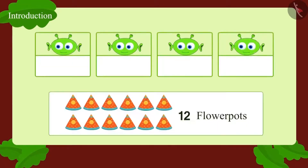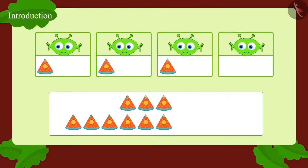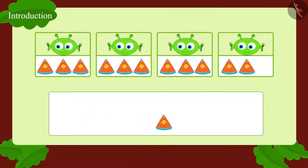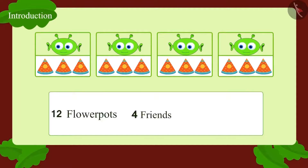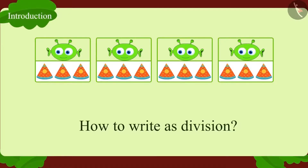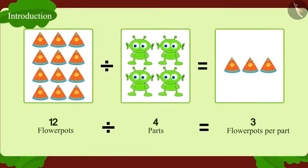We give one flowerpot to each friend. Eight flowerpots are left. We continue giving one flowerpot each to the four friends until all flowerpots are over. In this way, twelve flowerpots have been divided among four friends. Each friend got three flowerpots. In division form: twelve flowerpots divided into four equal parts equals three flowerpots in each part.